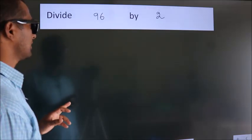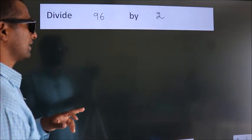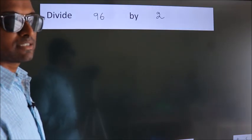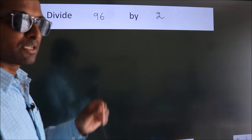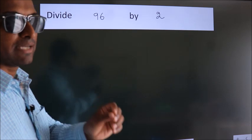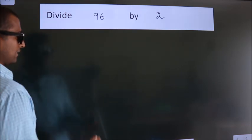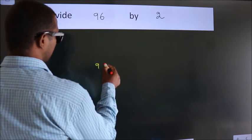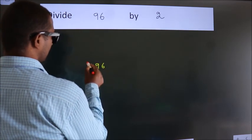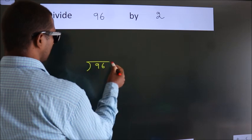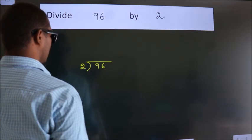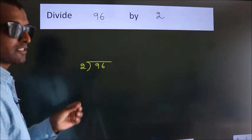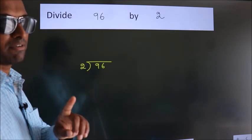Divide 96 by 2. To do this division, we should frame it in this way: 96 here, 2 here. This is your step 1.